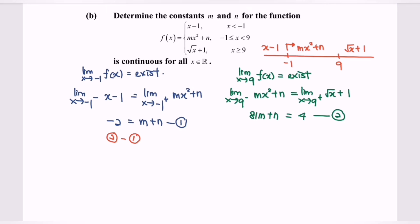In here, we will have 4 minus negative 2 and we will have 6. Followed by 81m minus m and we will have 80m.